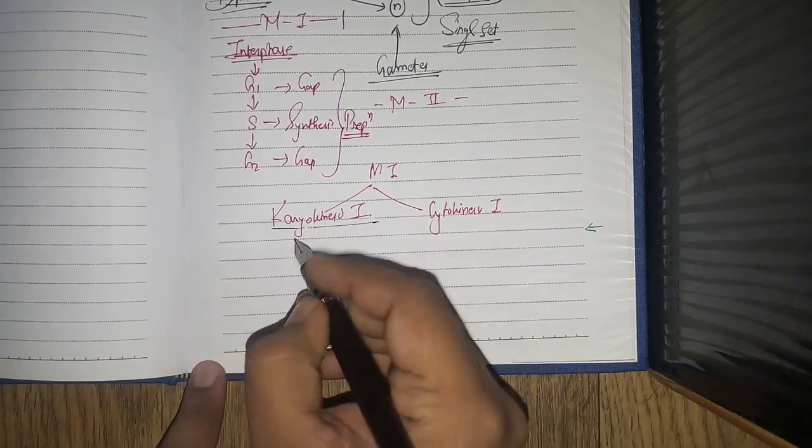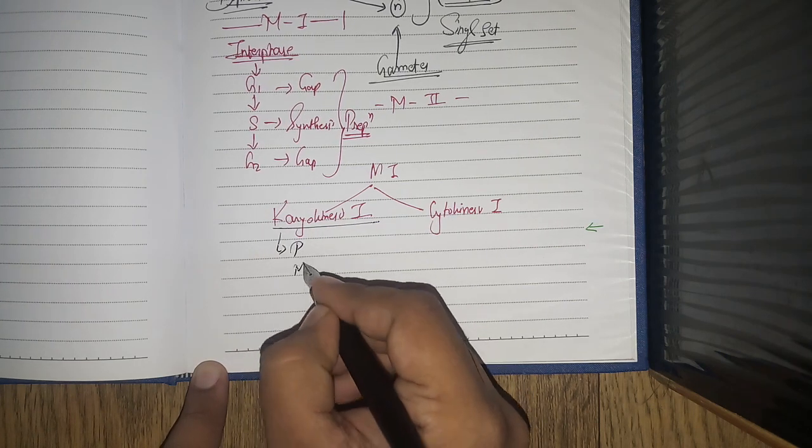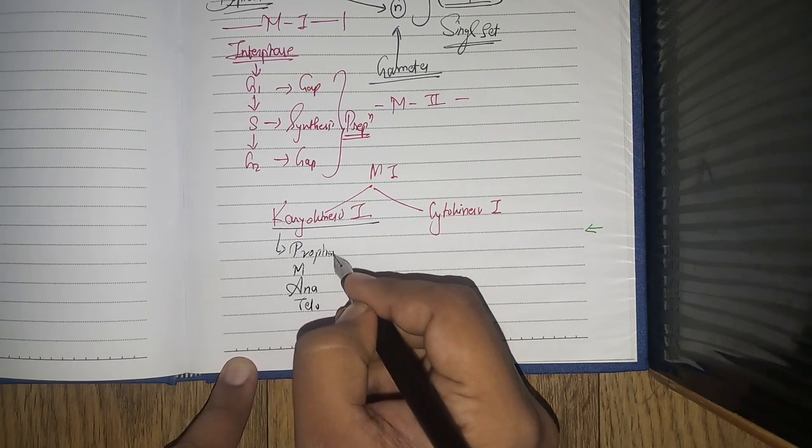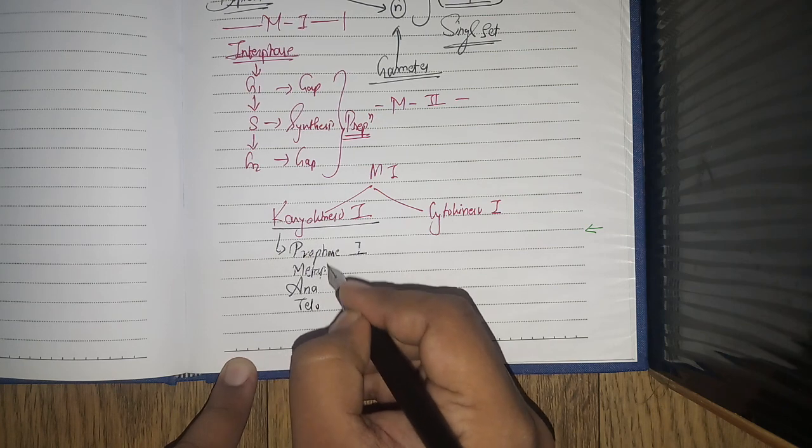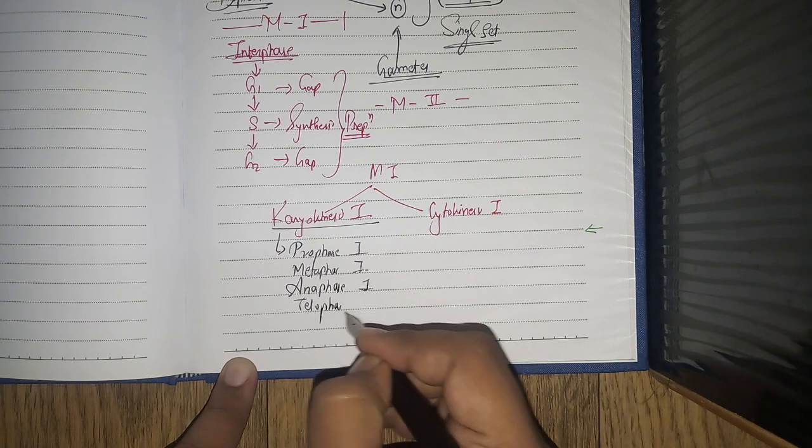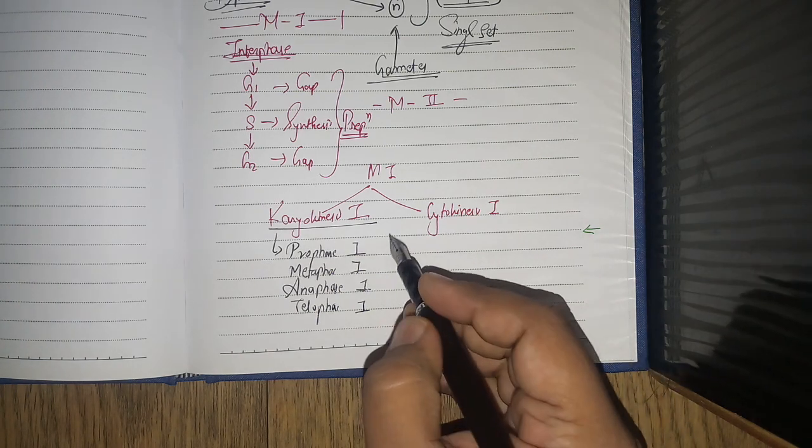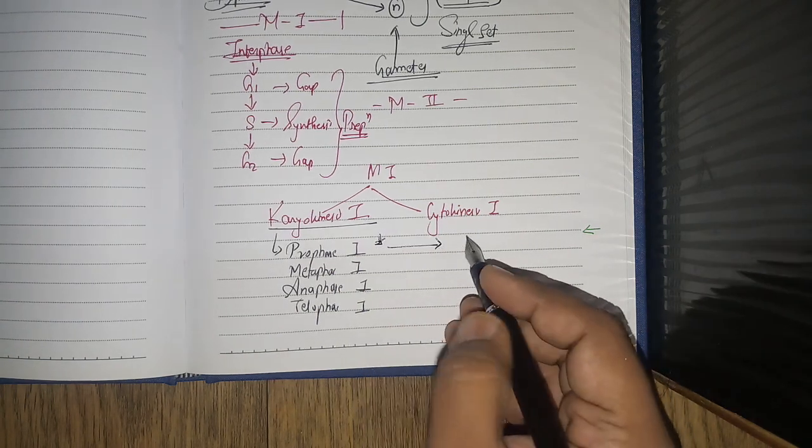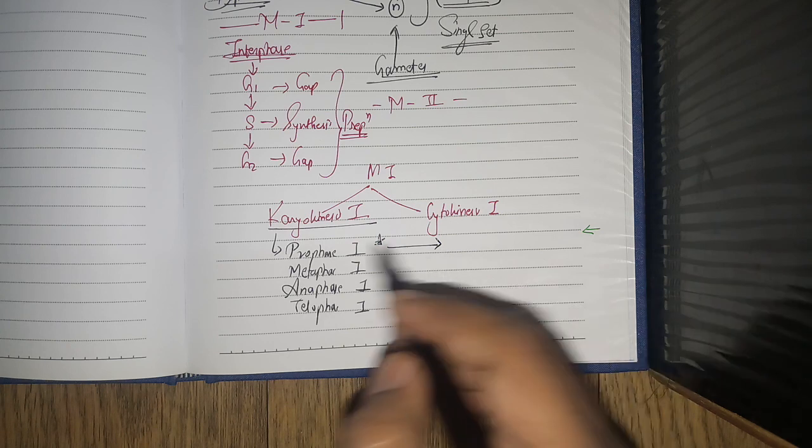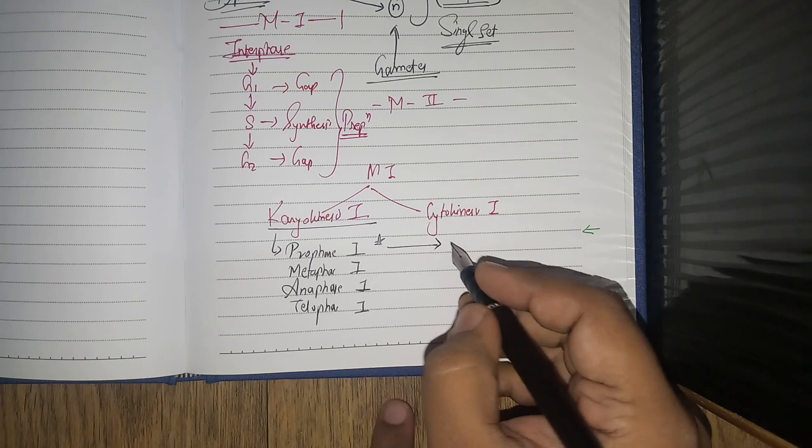Karyokinesis one and karyokinesis two will have prophase, metaphase, anaphase, and telophase. Prophase 1, metaphase 1, anaphase 1, telophase 1. A favorite question of the boards is: explain the five steps of prophase 1 with the help of diagram.